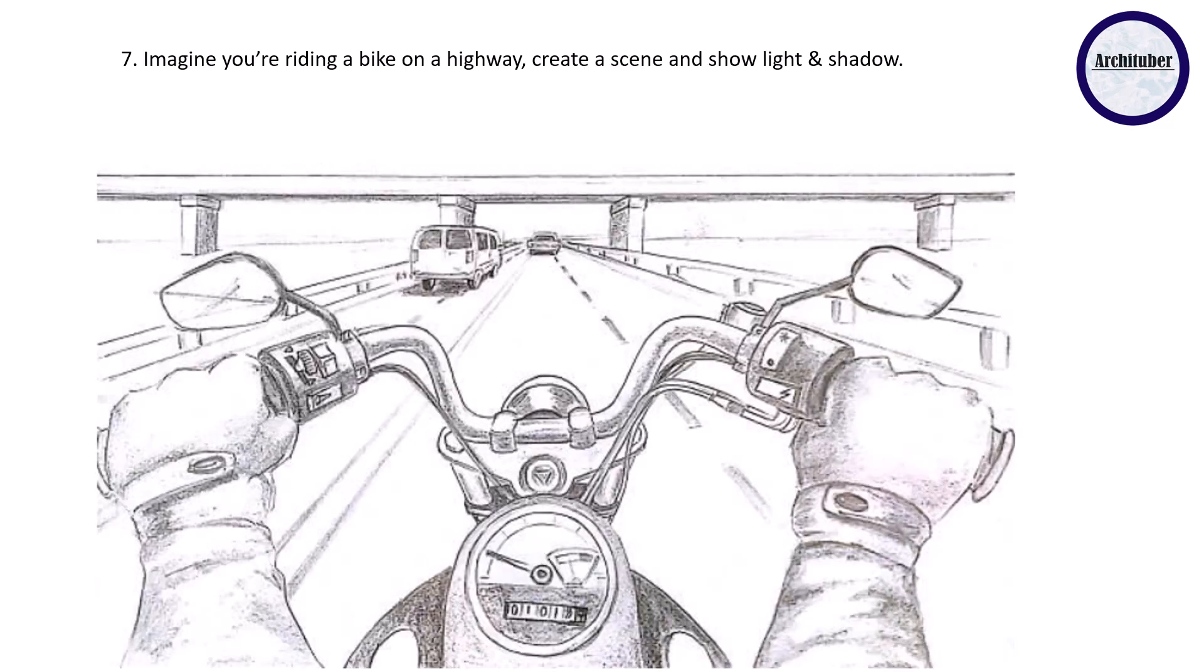Now coming on to perspective drawing. First question is imagine you're riding a bike on a highway, create a scene and show light and shadow. So this is a one point perspective drawing. This is your point somewhere here and you have the lines going likewise and then you're making a ride over here.